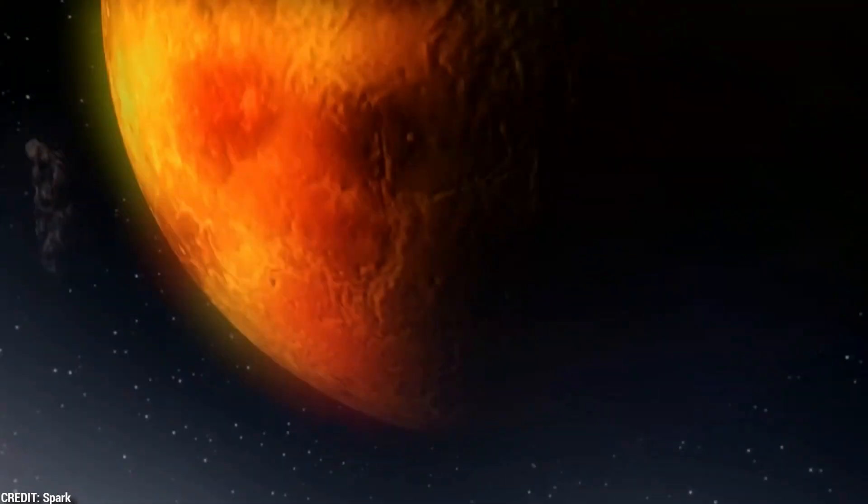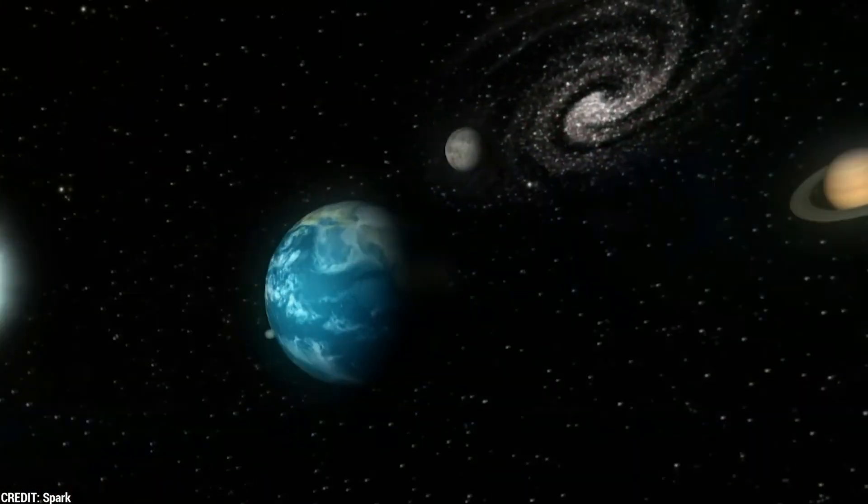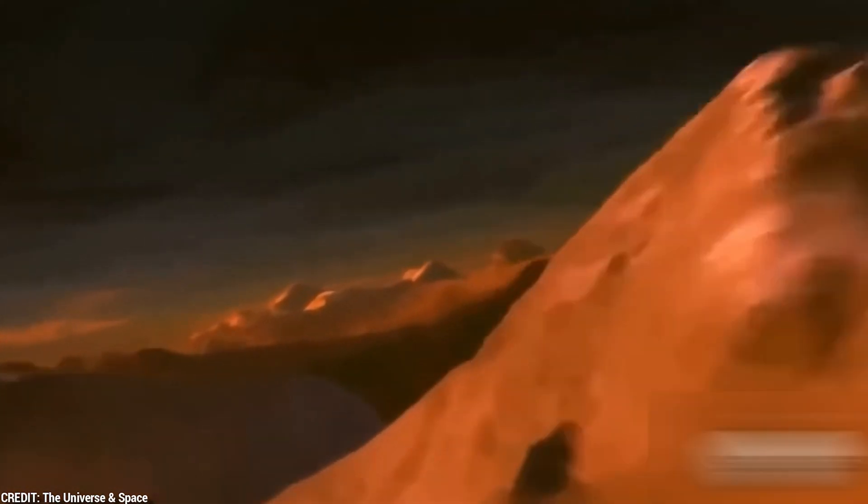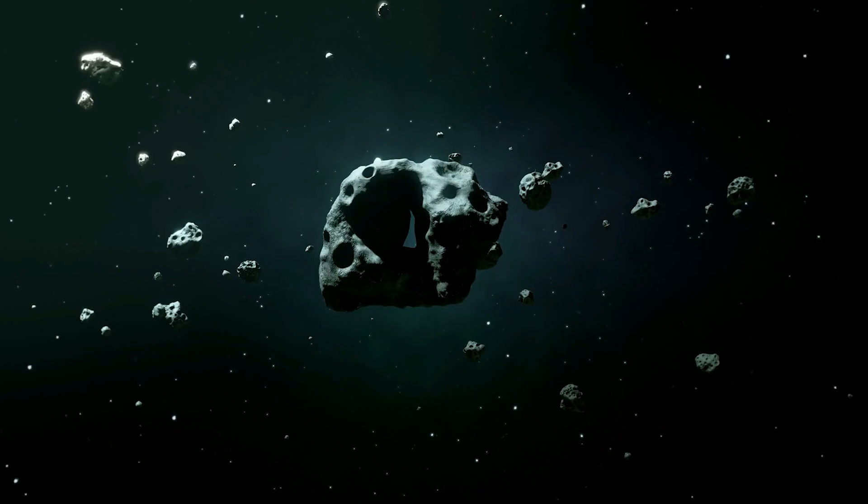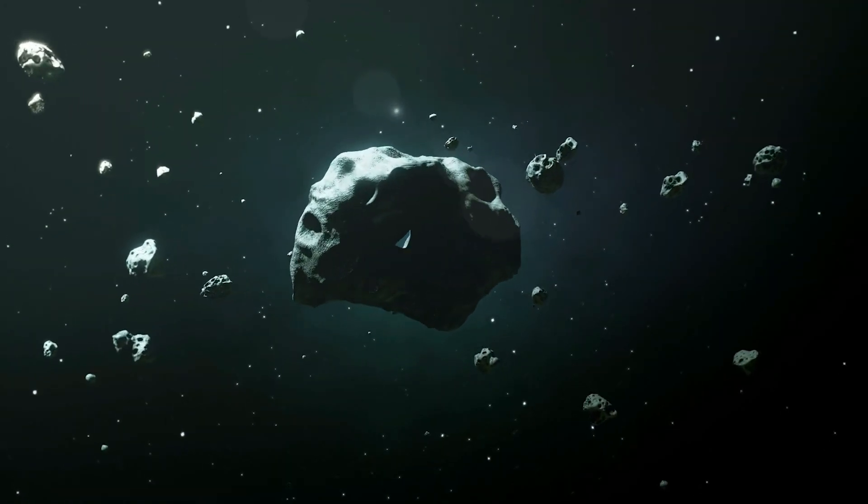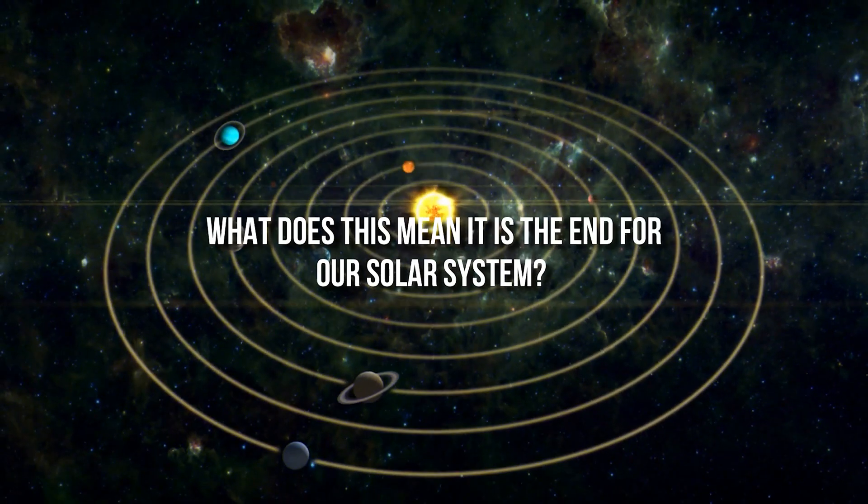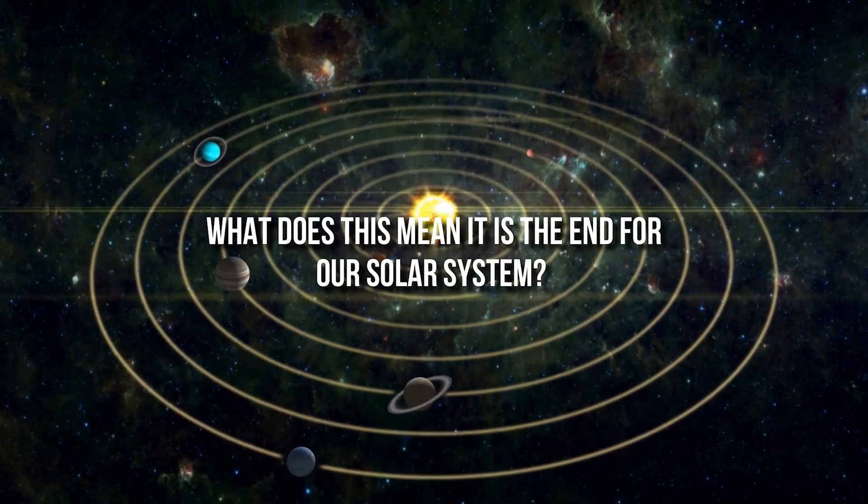Incredible things are happening in our solar system. Now and then, we are fortunate enough to welcome visitors from the deepest corners of the universe. And guess what? One of those visitors is making a comeback. Oumuamua suddenly showed up again and is now heading toward Earth. And what does this mean for our solar system?